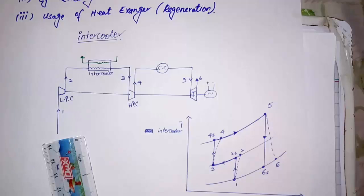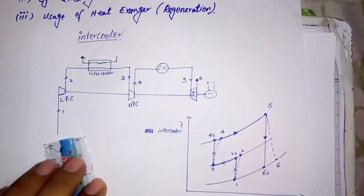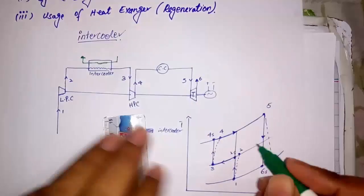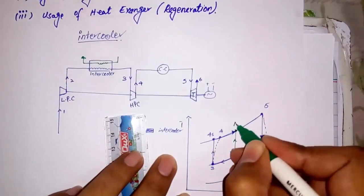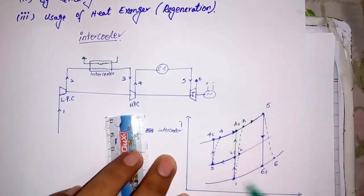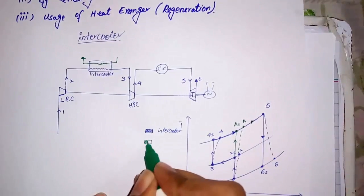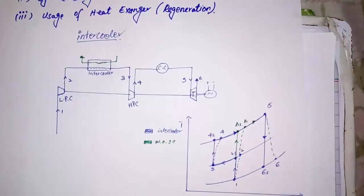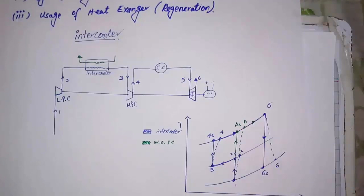Now if we don't use intercooler, then there would be a single compressor. The green line shows the TS diagram without intercooler. The points with subscript S are ideal reversible cases, and those points in which S is absent are for real cases. Now let us check the claim whether the intercooler improve the cycle or not by writing the formulas for both cases.